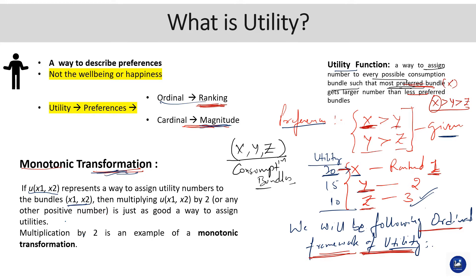Then if we are multiplying this function u(x1, x2) by any scalar, say for example by 2, or increasing this bundle by 4 times or any other positive number, it's just as good a way to assign utilities. For example, multiplication by 2 - if you multiply it by 2 times u(x1, x2), what it's essentially trying to focus on is that the preference ordering is going to remain the same.